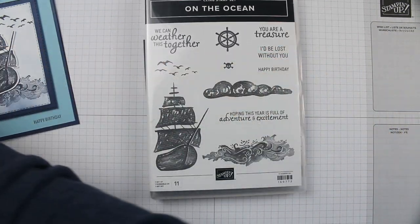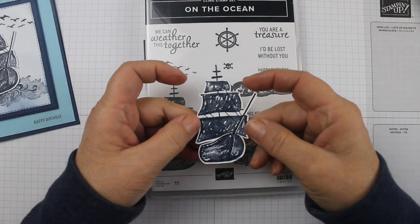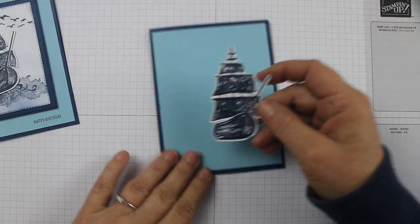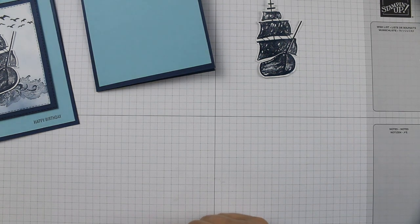So we have that. Then I took some stitched rectangles and I cut out a piece of Night of Navy with a stitched rectangle and I cut out a piece of white with a stitched rectangle.